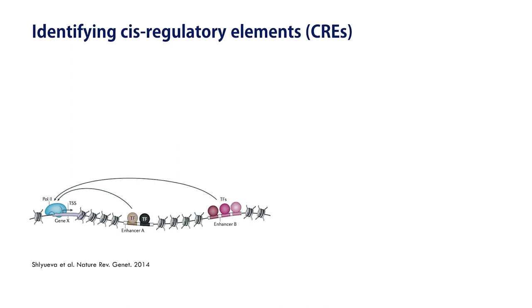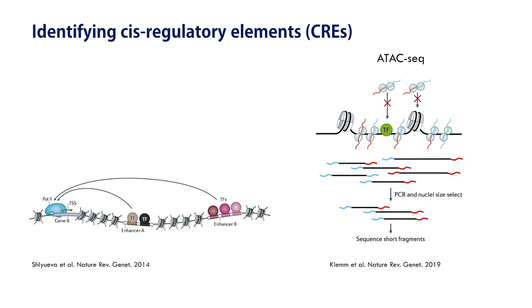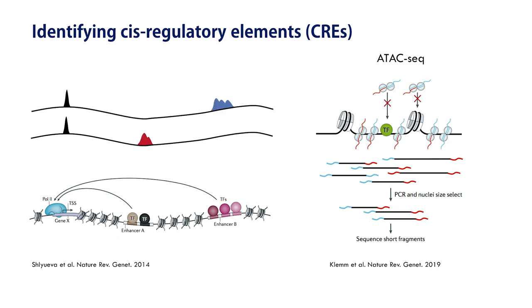So how can we identify cis-regulatory elements at the genome-wide level? One method that has become very popular in the last few years is called the Assay for Transposase Accessible Chromatin, or ATAC-seq in short. The idea is that when a cis-regulatory element is active, it's marked by an open chromatin environment that we can use to target a transposase to insert short barcodes into the region for selective amplification and sequencing.